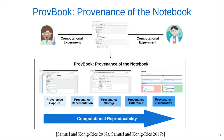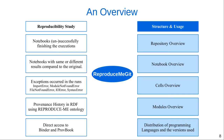ProveBook, which is an extension of Jupyter notebook, provides computational reproducibility support for Jupyter notebooks. It captures, describes, stores, visualizes, and compares provenance of the execution of the notebooks. For the analysis of the structure and usage of notebooks, it provides an overview of the repository, the notebooks in the repository, cells in each notebook, the modules, and the execution environment of the notebooks.